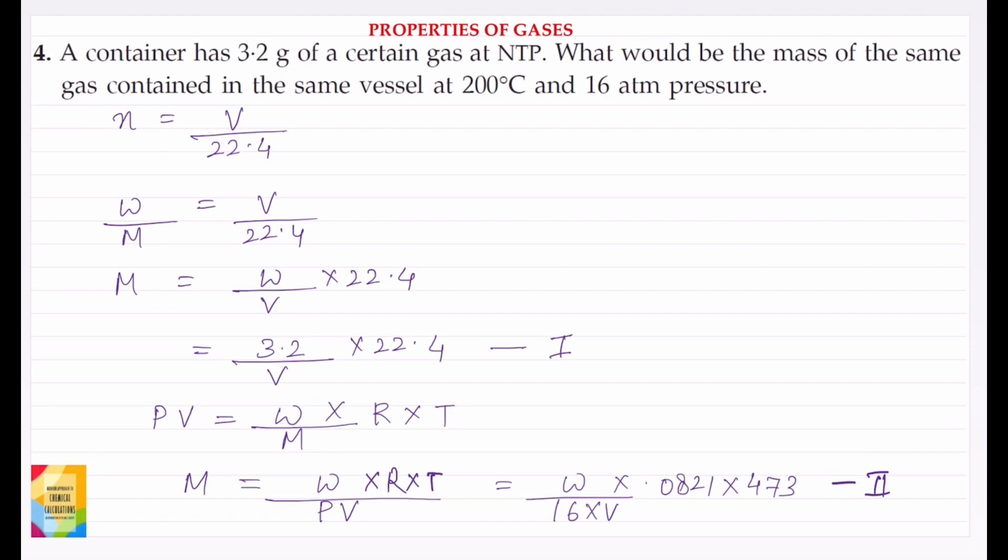Question 4. A container has 3.2 grams of a certain gas at NTP. What would be the mass of the same gas contained in the same vessel at 200 degrees Celsius and 16 atmosphere pressure?